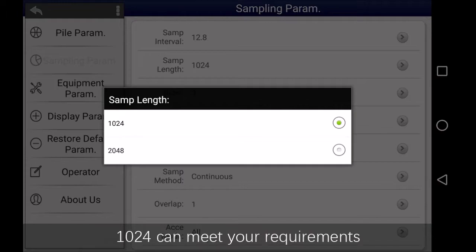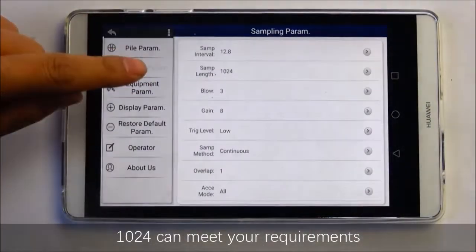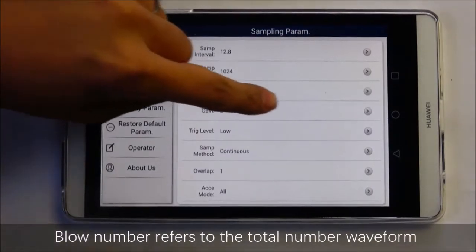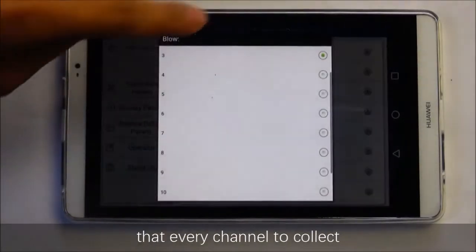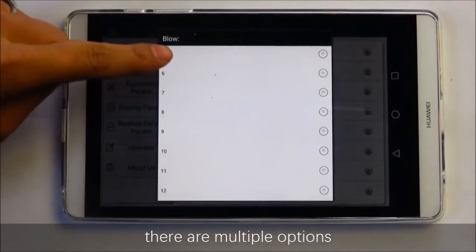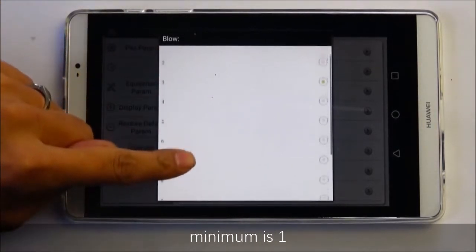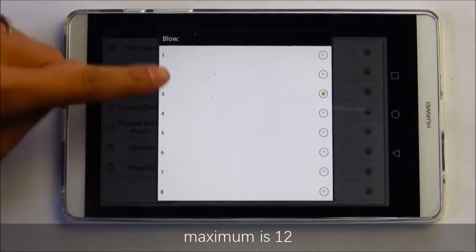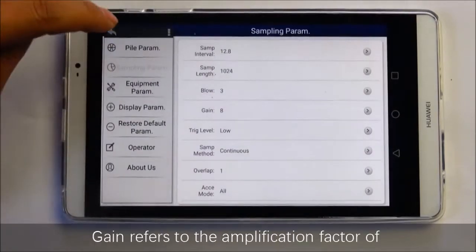Generally, 1024 can meet your requirements. Plumb number refers to the total number of channels that every channel can select. There are multiple options, minimum is 1, maximum is 12.